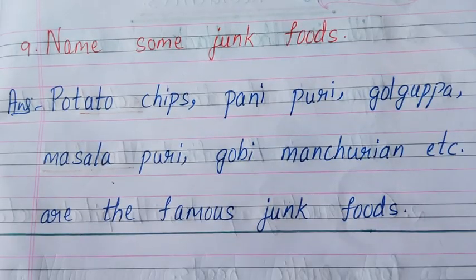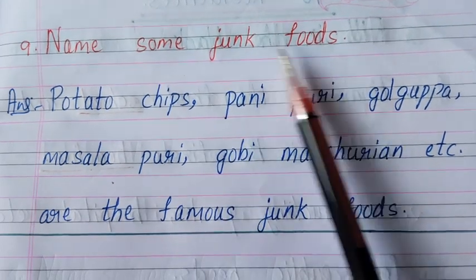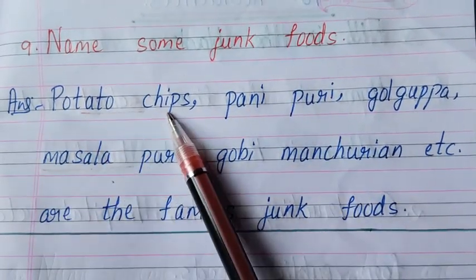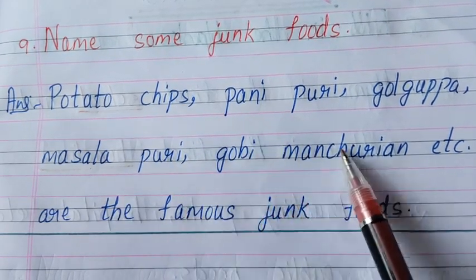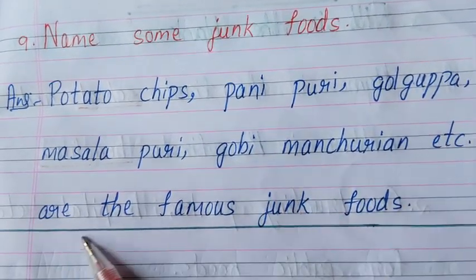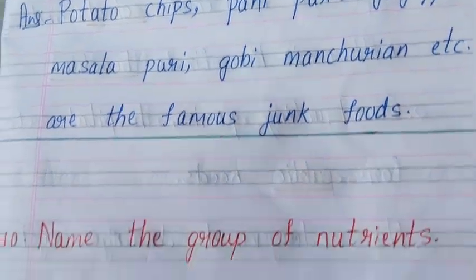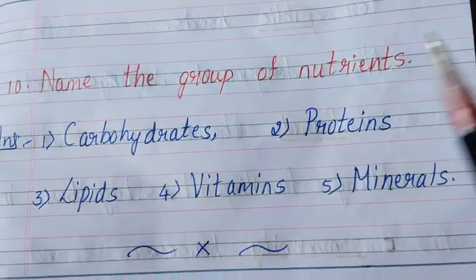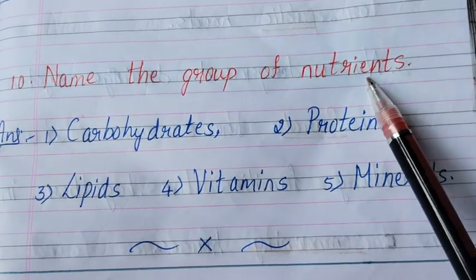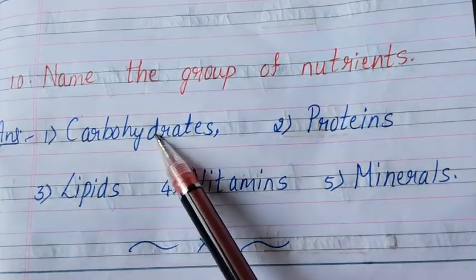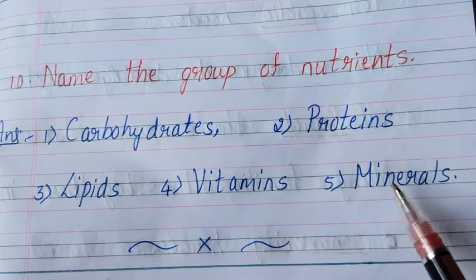Question number nine: name some junk foods. Answer: potato chips, pani puri, gol guppa, masala puri, gobi manchurian, etc. are the famous junk foods. Question number ten: name the group of nutrients. Answer: carbohydrates, proteins, lipids, vitamins and minerals.